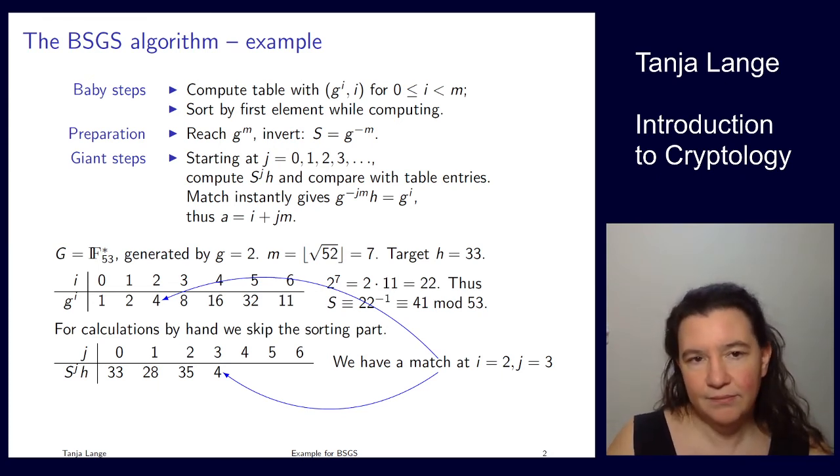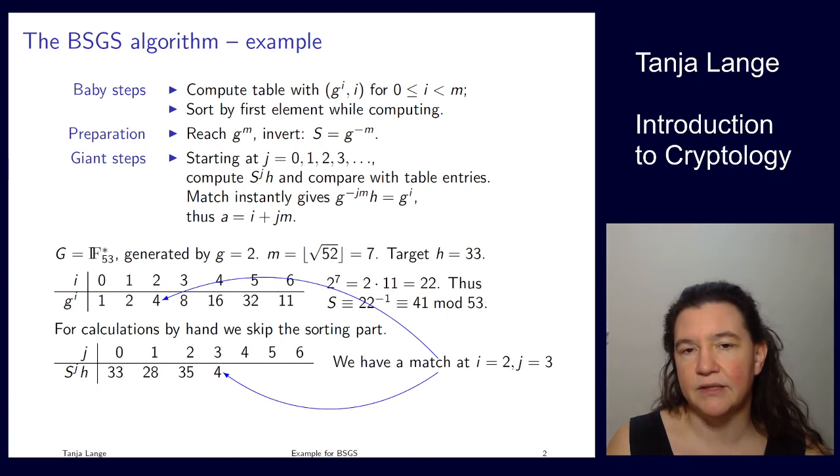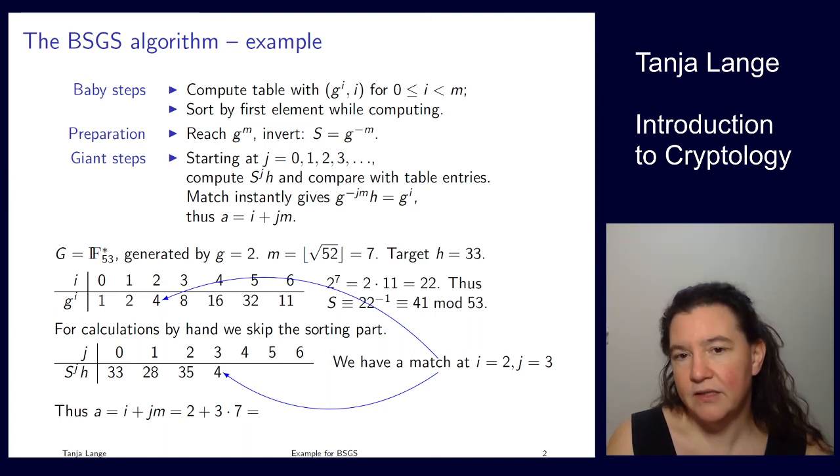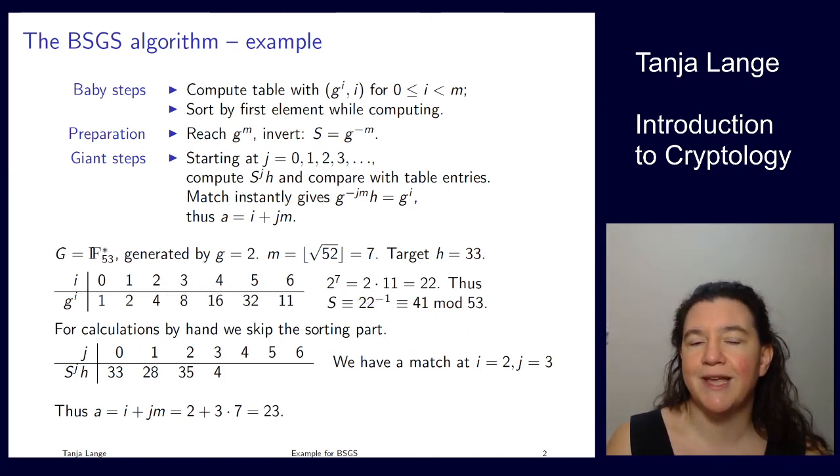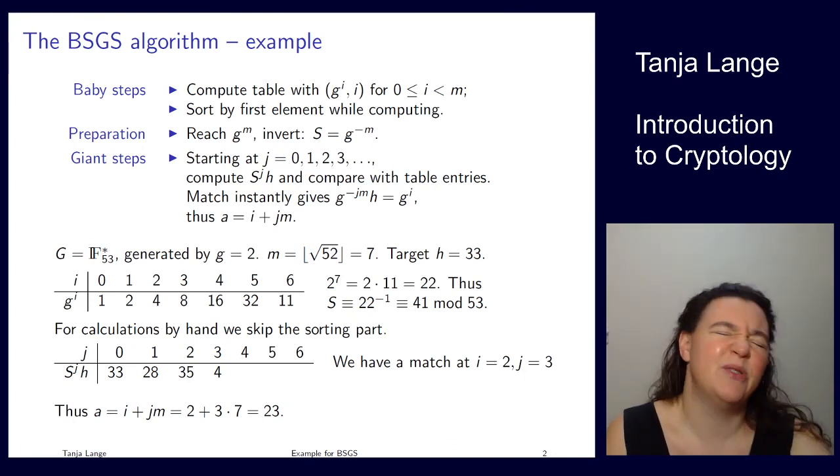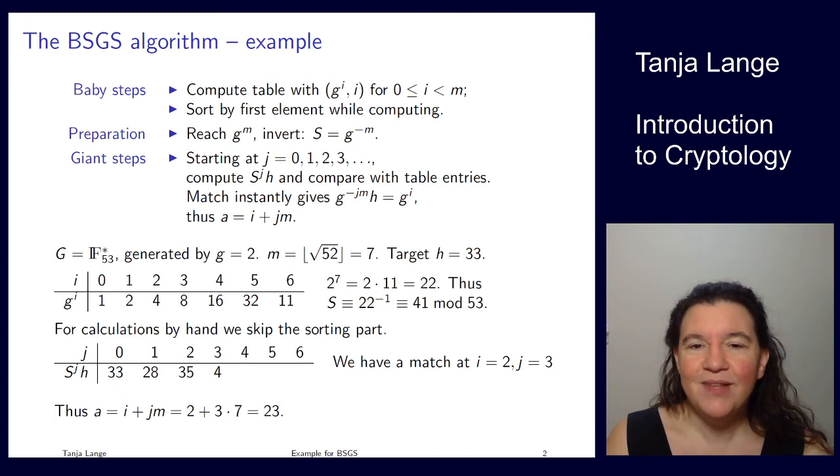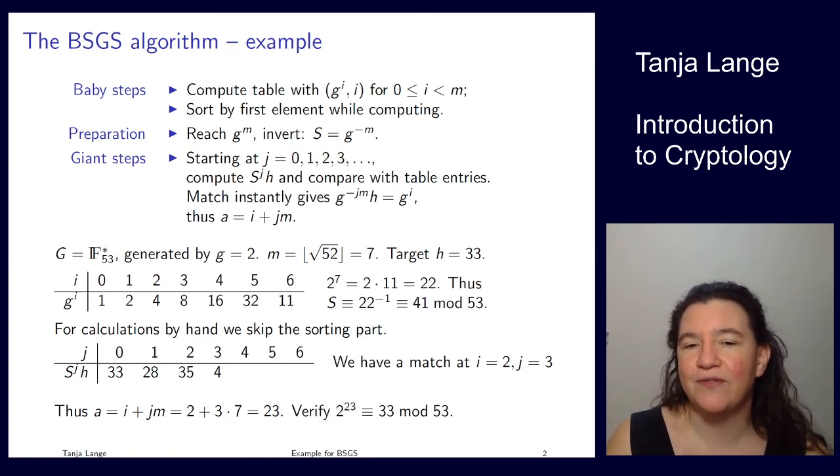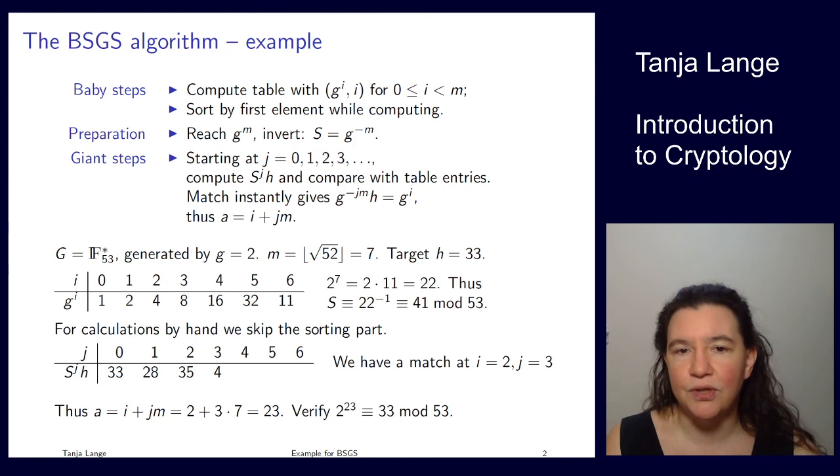If you have a match, then you can find the secret key. We now have to write our a as i plus j times m. We have i equals 2, j equals 3, m equals 7, so a equals 2 plus 3 times 7 equals 23. You should always verify that this is the correct number. In this case, the verification shows that 2 to the 23 is actually 33 mod 53, so we have successfully broken our system.